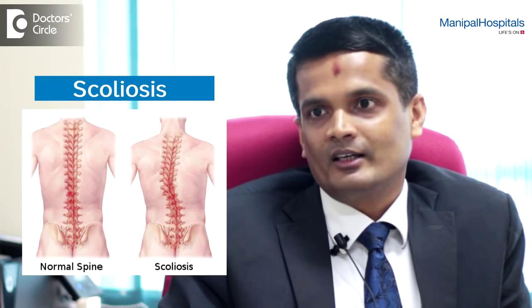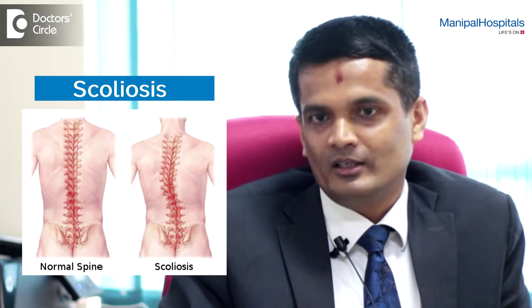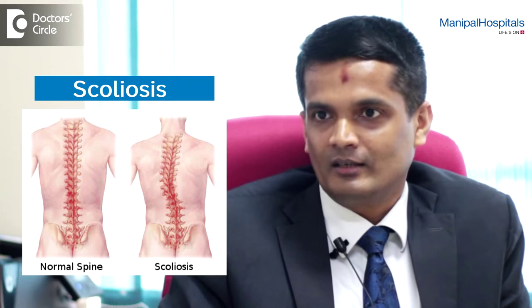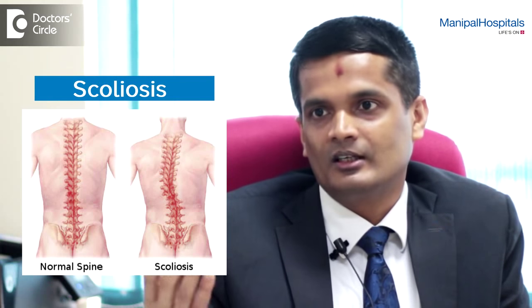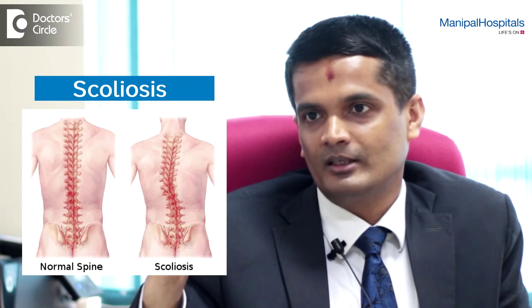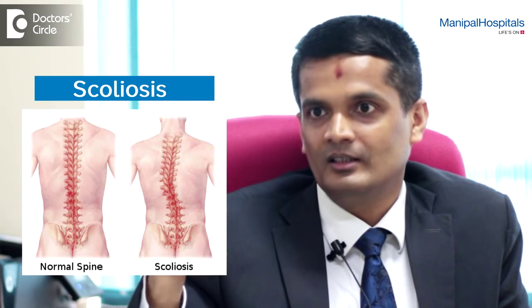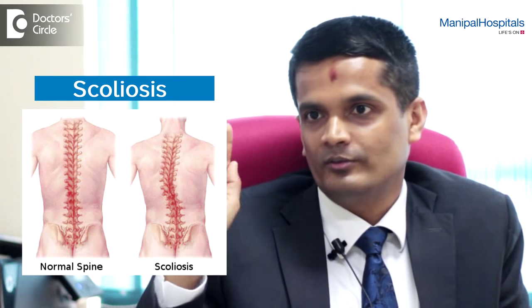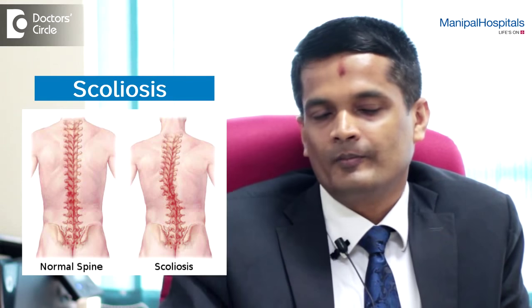Scoliosis is usually the sideward bend of the spine, which was the classic definition, but nowadays we believe that it's a three-dimensional deformity. It is not just the sideward bend — it also involves rotation and loss of the backward curve.